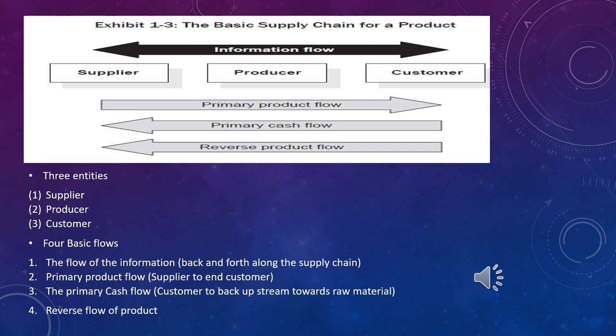Look at picture 1-3, the basic supply chain of a product. A very basic model of the supply chain needs three entities: the supplier, the producer, and the customer. The supplier is the entity who provides raw materials to the producer. The producer converts the raw material into a finished good and gives it to the customer. For the basic supply chain, we need these three entities.